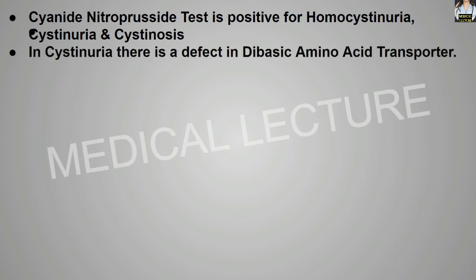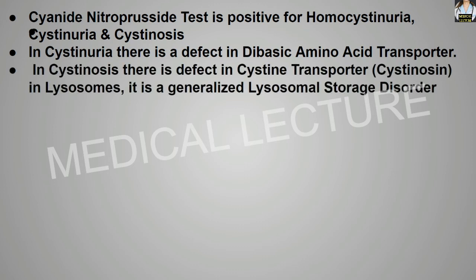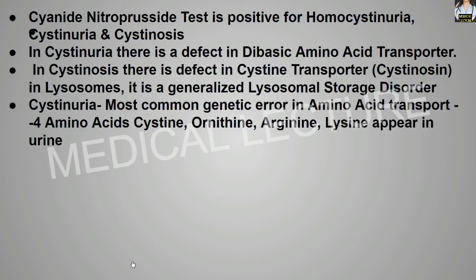In cystinuria, there is a defect in the dibasic amino acid transporter. In cystinosis, there is a defect in the cysteine transporter called cystinosin in the lysosome, and it is a generalized lysosomal storage disease. Cystinuria is the most common genetic error in amino acid transport, with four amino acids — cysteine, ornithine, arginine, and lysine — appearing in the urine.